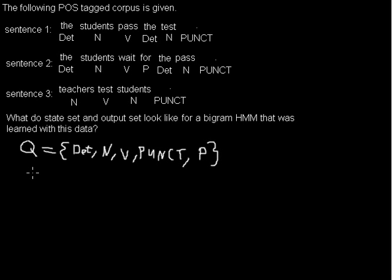And the output set we denote with O for output. Well, that's just basically the same but from the surface forms. So we have here the, and students, pass. The we already have. I wanted to write test.